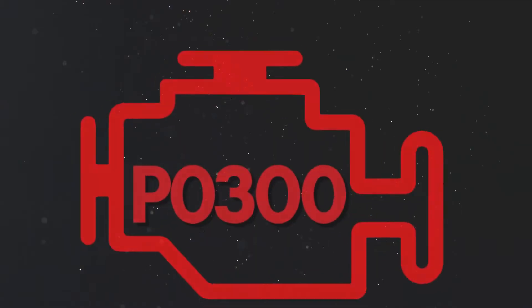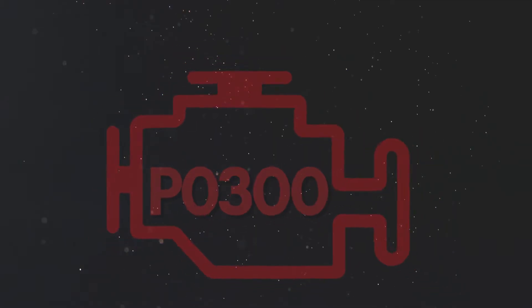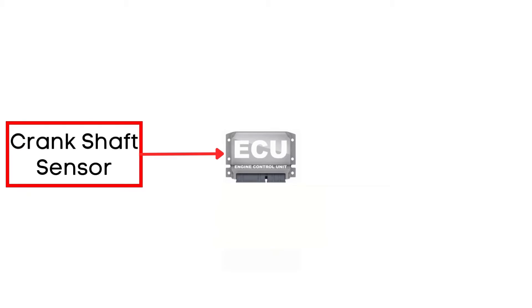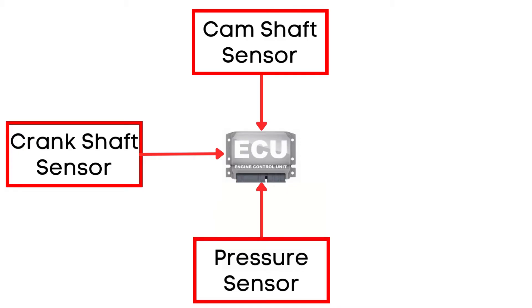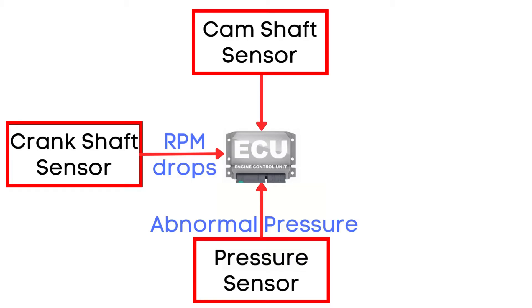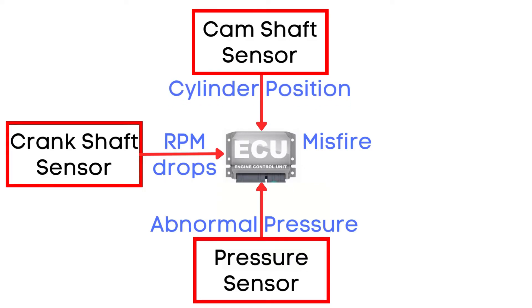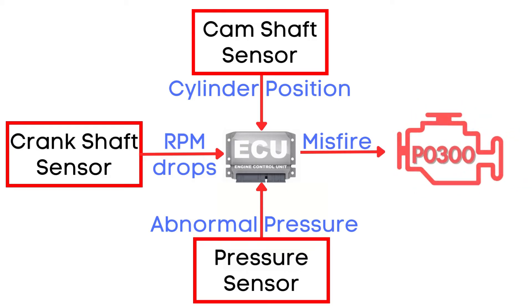Now let's dive into why P0300 gets triggered. The engine control unit, or ECU, monitors the signals from the crankshaft position sensor, camshaft position sensor, and cylinder pressure sensor. These sensors provide real-time data about your engine's performance. When a misfire occurs in one or more cylinders, it causes the engine's RPM to drop abruptly. Simultaneously, the pressure inside the cylinder becomes abnormal. This sudden change in signals from the sensors is what the ECU reads as a misfire. The camshaft position sensor helps the ECU determine which specific cylinder is experiencing the misfire. And that's how the P0300 trouble code is triggered.